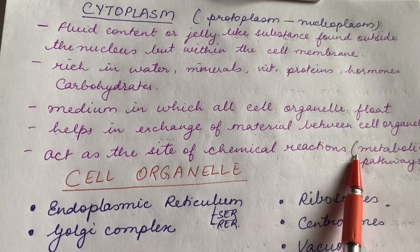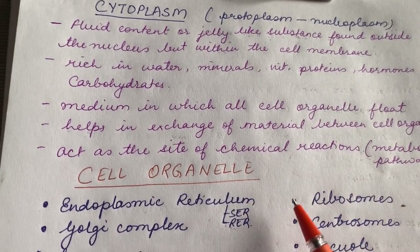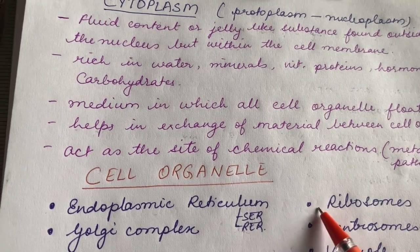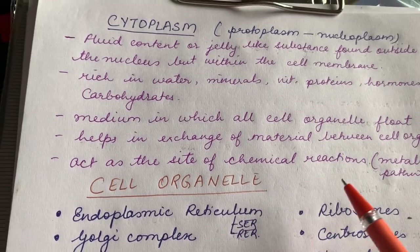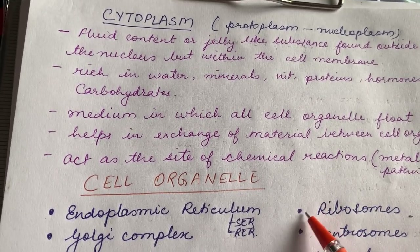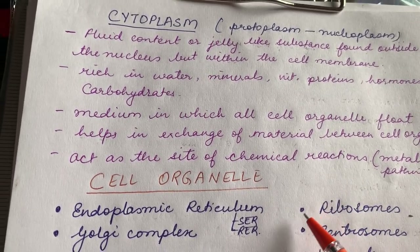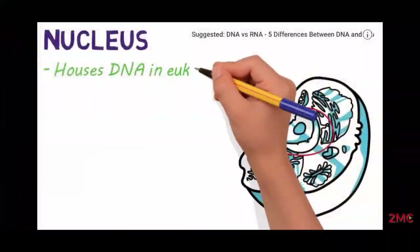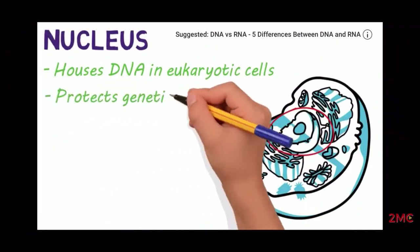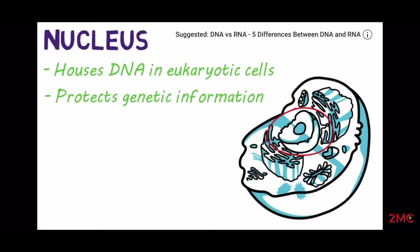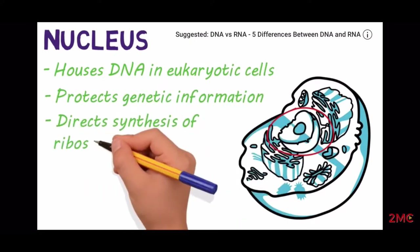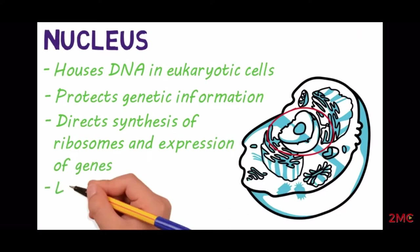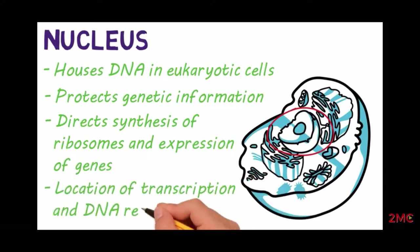The cytoplasm acts as a site of chemical reactions — all the metabolic activity or chemical reactions going on inside the cell occur in the cytoplasm. No cell is without cytoplasm. It also houses the DNA, protects genetic information, and directs the synthesis of ribosomes and the expression of genes.